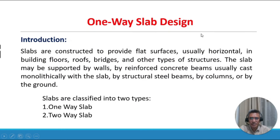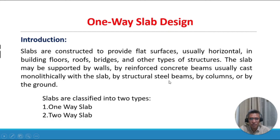One-way slab design introduction. Slabs are constructed to provide flat surfaces, usually horizontal, in building floors, roofs, bridges, and other types of structures. The slab may be supported by walls, by reinforced concrete beams usually cast monolithically with the slab, by structural steel beams, by columns, or by the ground.